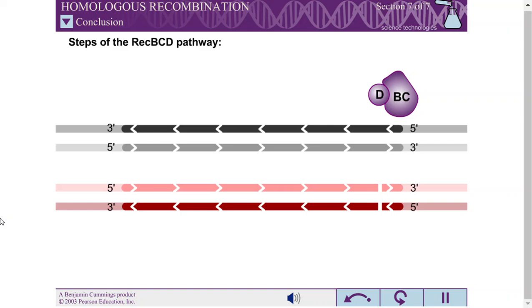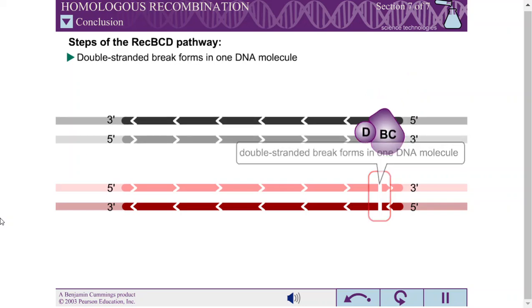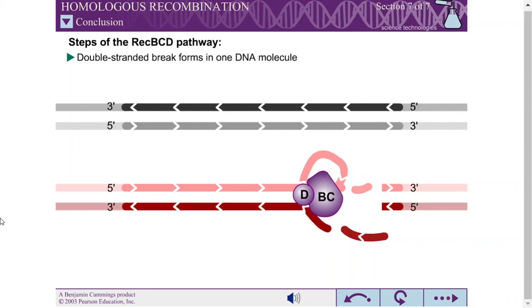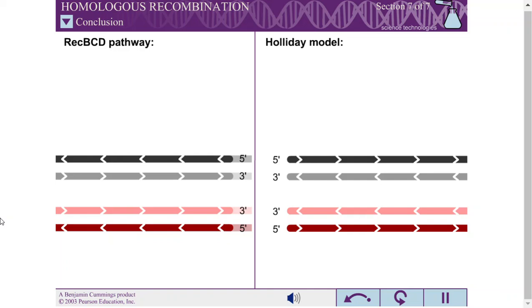The mechanism of recombination in E. coli is the REC-BCD pathway, which requires a double-stranded break in one of the DNA molecules involved in recombination. Several enzymes are involved in this pathway. The double-strand break-repair model of homologous recombination differs from the Holliday model in several respects.